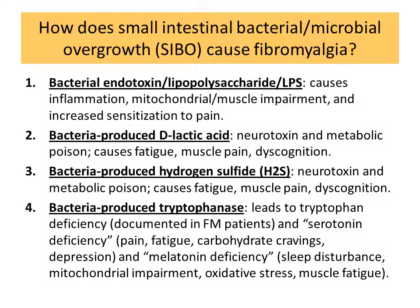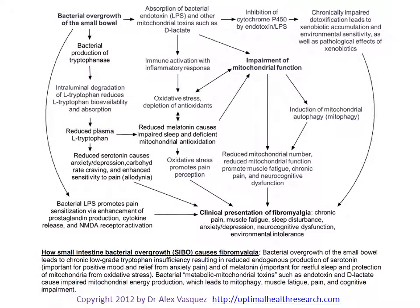This is just the tip of the iceberg, but these four considerations certainly provide scientific substantiation for the microbial etiology of fibromyalgia — in other words, how bacterial and microbial overgrowth of the small intestines can lead to the clinical picture we describe as fibromyalgia. In this diagram I've drawn out some of the interconnected web-like considerations relevant to fibromyalgia, starting in the upper left-hand corner: how bacterial overgrowth of the small bowel ultimately leads to mitochondrial impairment, oxidative stress, central sensitization, tryptophan deficiency, serotonin deficiency, melatonin deficiency, and all of the other sub-phenomena that ultimately produce the clinical presentation of fibromyalgia.